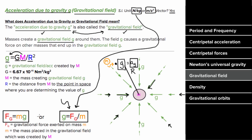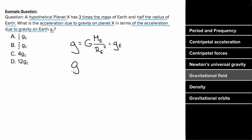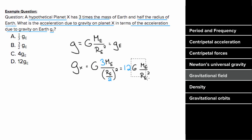Let's say a hypothetical planet X has three times the mass of Earth and half the radius of Earth. What is the acceleration due to gravity on planet X in terms of g_e? The gravitational field on Earth is G × M_e / R_e² = g_e. On planet X it's G × 3M_e / (R_e/2)². Squaring the half gives one fourth in the denominator, so three divided by one fourth is 12, giving g_x = 12 g_e.